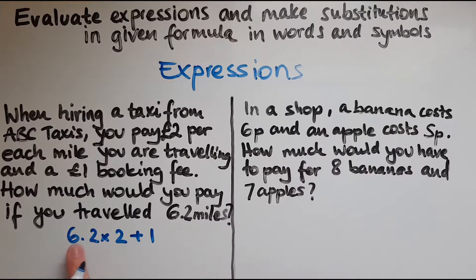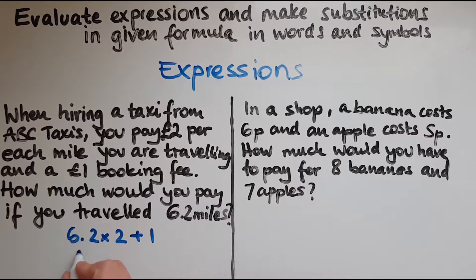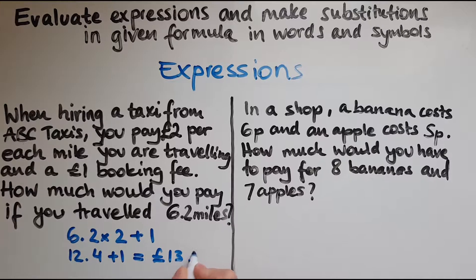So 6.2 times 2, or 2 times 6.2 because that's easier to do. That gives us 12.4, add the one pound booking fee, which gives us in total 13 pounds and 40 pence. So we've worked it out, and that means we've actually evaluated an expression given in words.